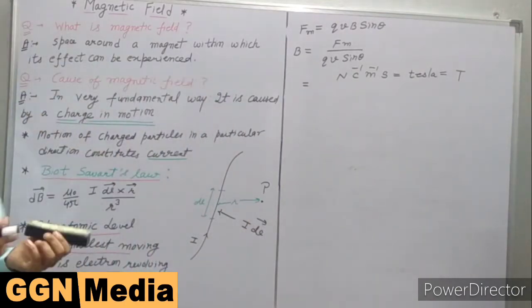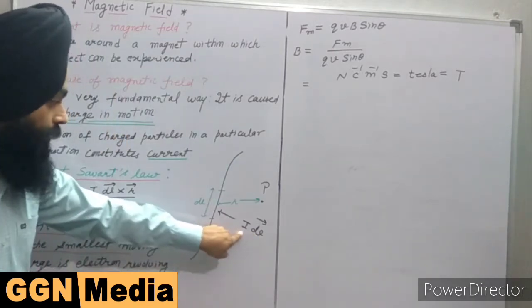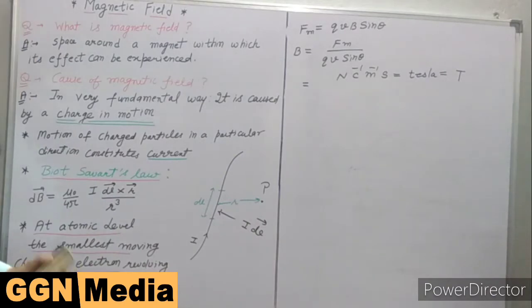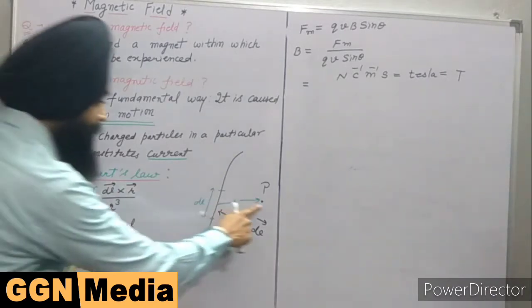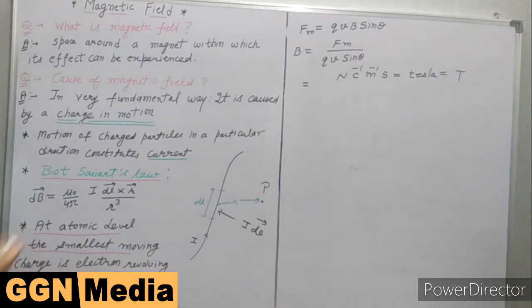As we know that current is a scalar quantity, but length dL is a vector quantity. So the combined form is called a current element. The field at this point P due to this current element of length dL is given by Biot-Savart law, which is equal to mu0 upon 4pi, I dL cross R upon R cube. Here R is the distance between this current element and the observation point.